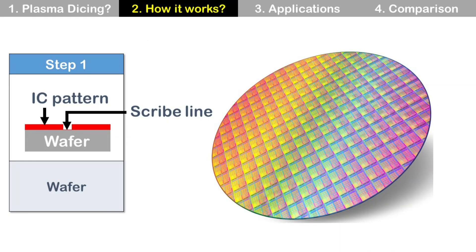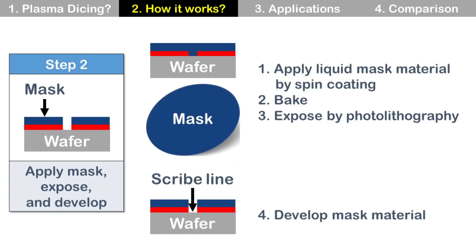How does Plasma Dicing work? This is a simplified process flow. Step 1: We have a wafer, and it has IC patterns on top. Step 2: Apply mask, expose, and develop. It is a photolithography process.